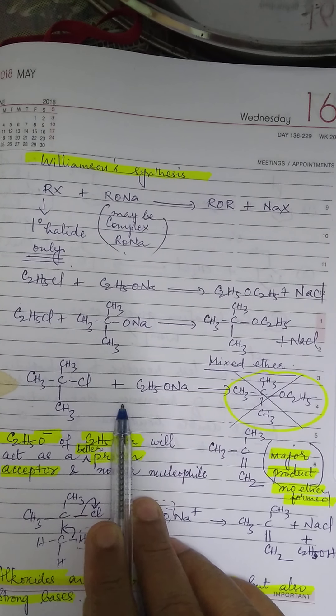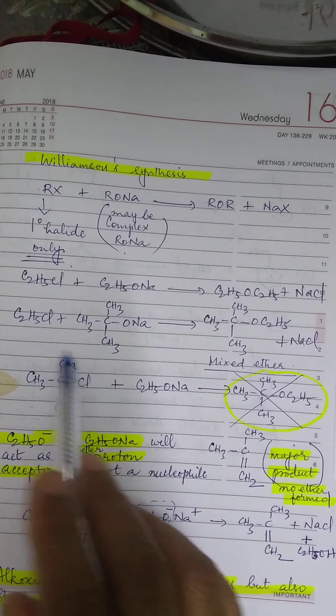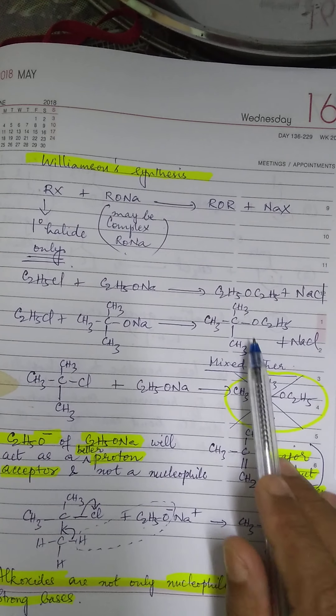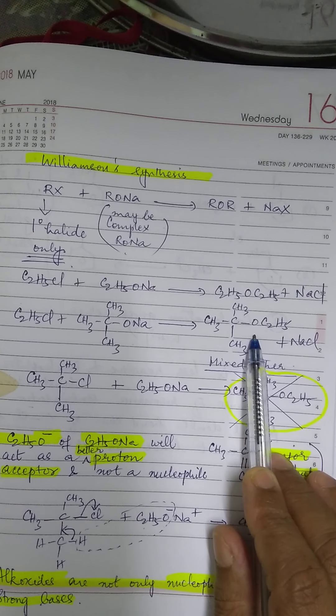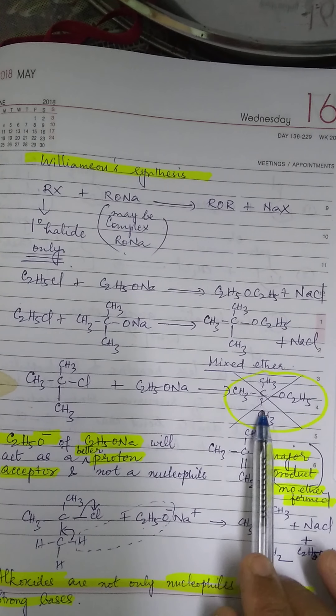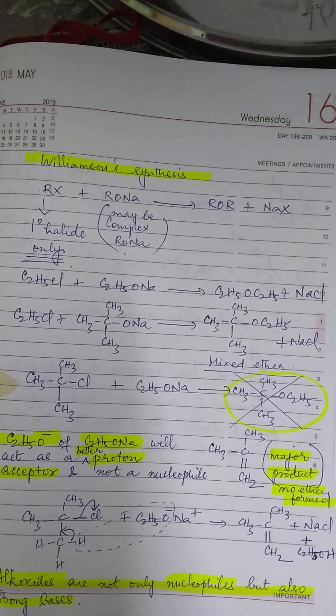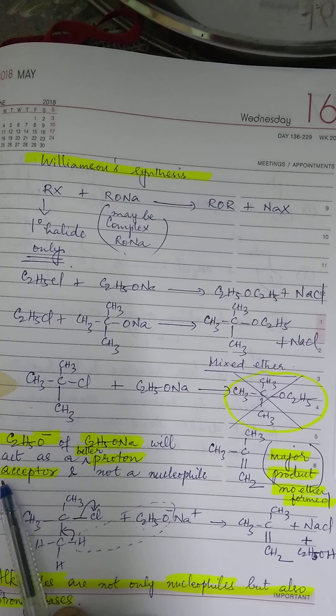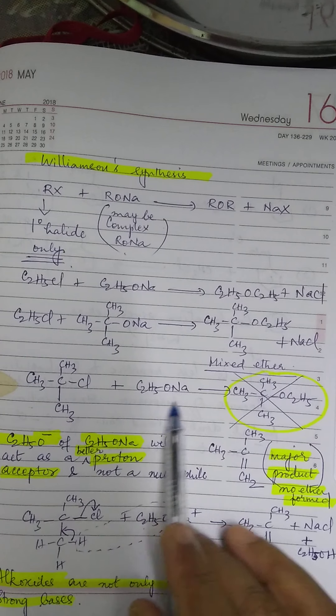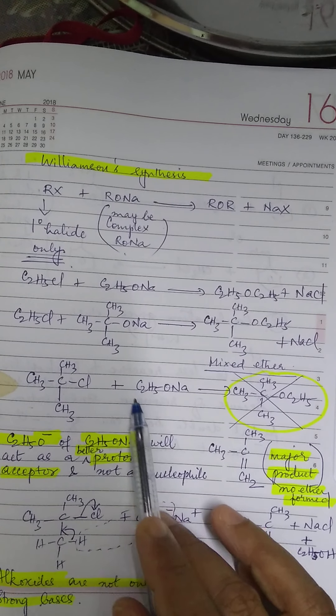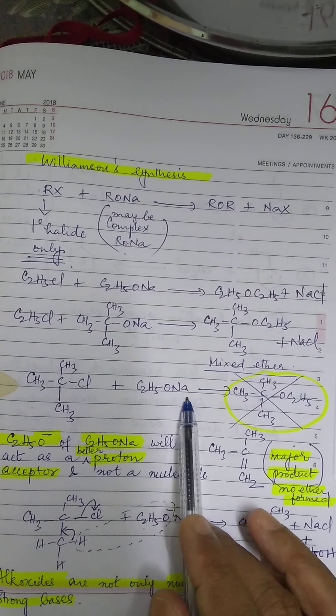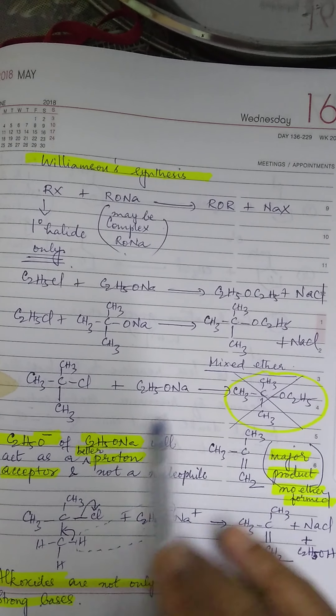You may get ROR but what they have found is only the first combination will give you the desired ether but the second combination will not give you an ether. Why will it not give you an ether? Because in the second one, C2H5O minus and Na plus, this is how it will split.